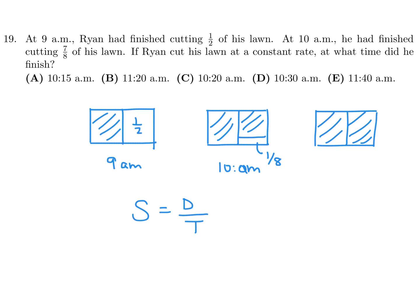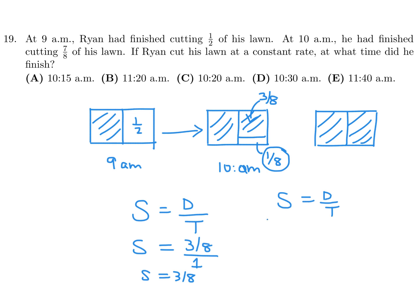Using speed equals distance over time: his speed is three-eighths per hour. To cut the remaining one-eighth: time equals (1/8) ÷ (3/8) = 1/3 of an hour, which is 20 minutes. So he finishes at 10:20 a.m. Number 19 is C.